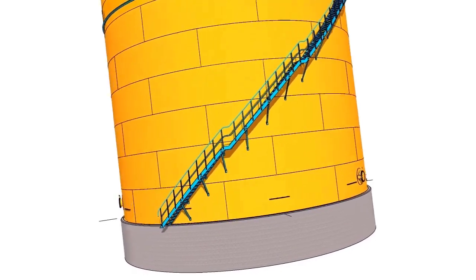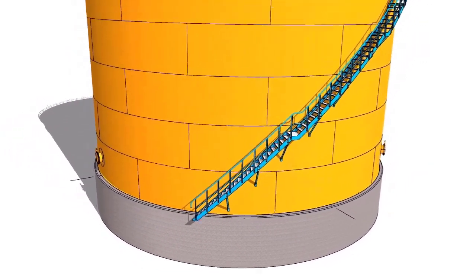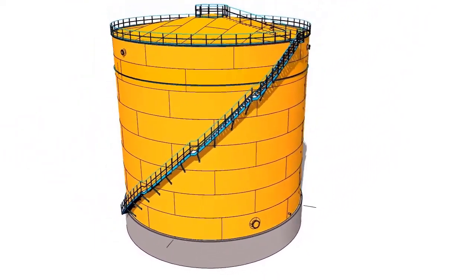Fit up and weld the annular plate with the shell. Final welding shall be between the annular plate and the bottom sketch plates.